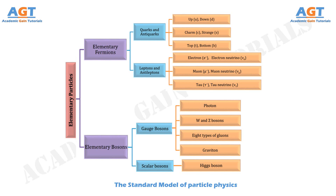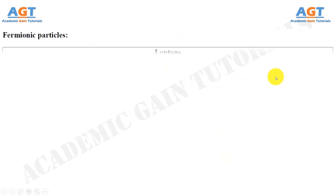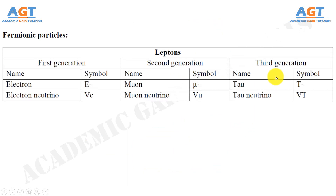So now let's look in brief about the elementary fermionic particles and the fermionic anti-particles in detail. The fermionic particles are divided into leptons and quarks. The first generation of leptons includes electron and electron neutrino. The second generation of leptons includes muon and muon neutrino. The third generation of leptons includes the tau and tau neutrino.